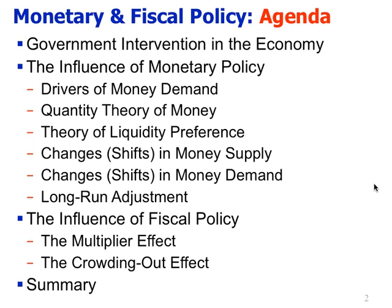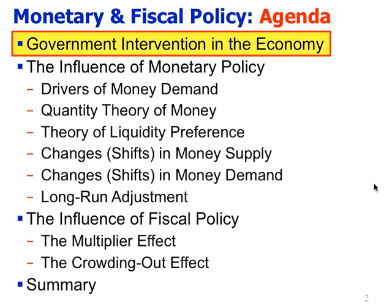The chapter is about monetary and fiscal policy, and it's ultimately motivated by this idea of what the government can do in the economy. The government gets blamed for economic woes and gets credit for economic gains, but what can the government actually do in the economy and what should they do? The first topic is understanding government intervention.